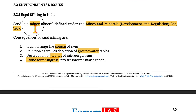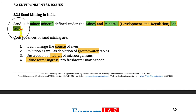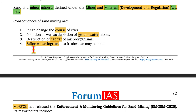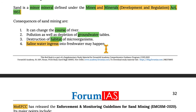Moving on to sand mining — sand is a minor mineral as defined in the Mines and Minerals (Development and Regulation) Act of 1957. Consequences of sand mining include changes in the course of rivers, groundwater table depletion, destruction of habitats of microorganisms, and the possibility of saline water ingress into freshwater.